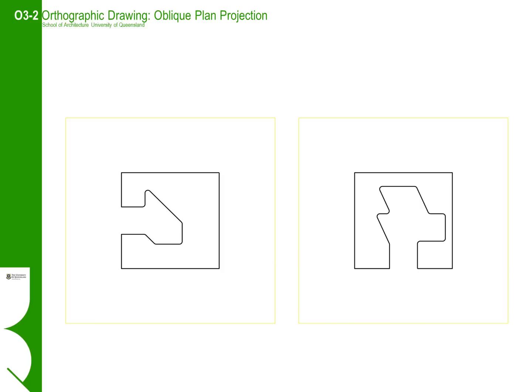In this instructional we will work through some of the steps to create a plan oblique paraline projection. The plan oblique is perhaps the simplest and most widely used paraline or axonometric projection. For objects or buildings that are predominantly simple extrusions, it is easiest to start with a scaled version of the plan drawn on tracing paper. We will then create the paraline view from this plan.